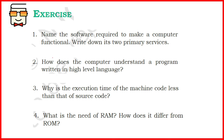Starting with the first question: name the software required to make a computer functional. It is the system software, and specifically the operating system. System softwares are the softwares that provide or allow the computer system to perform basic functions, and the operating system is the software that starts the computer. It allows other softwares and hardwares to run, to communicate, and to provide services to the end user.